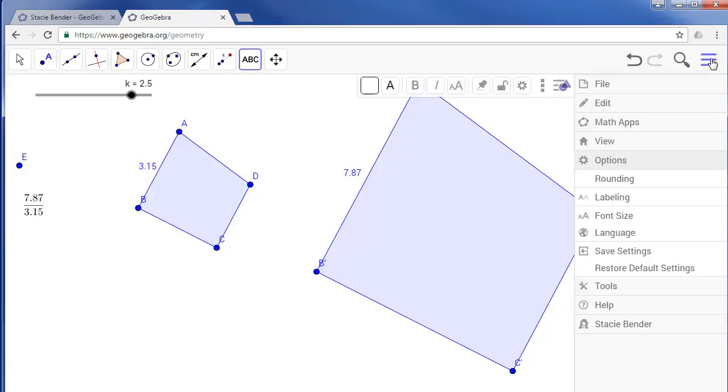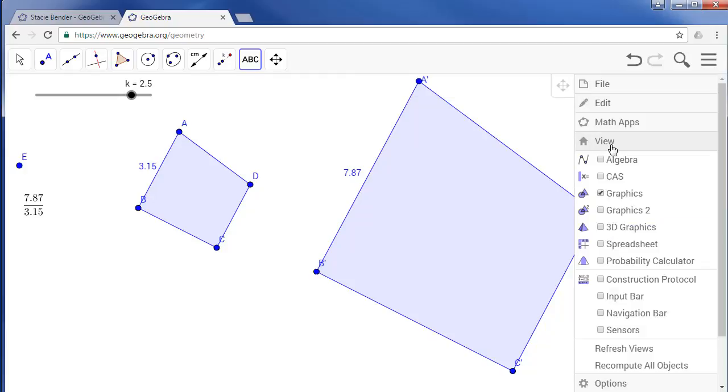Unless your mental math skills are really good, you may not be convinced that the scale factor is actually the ratio of the image over the pre-image sides. So let's go to the menu and choose view and we're going to add the input bar.